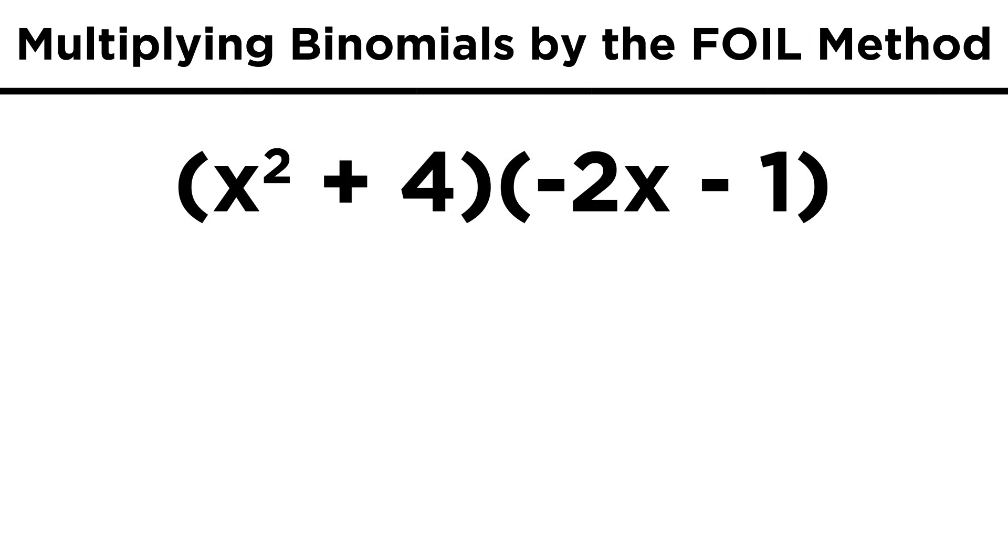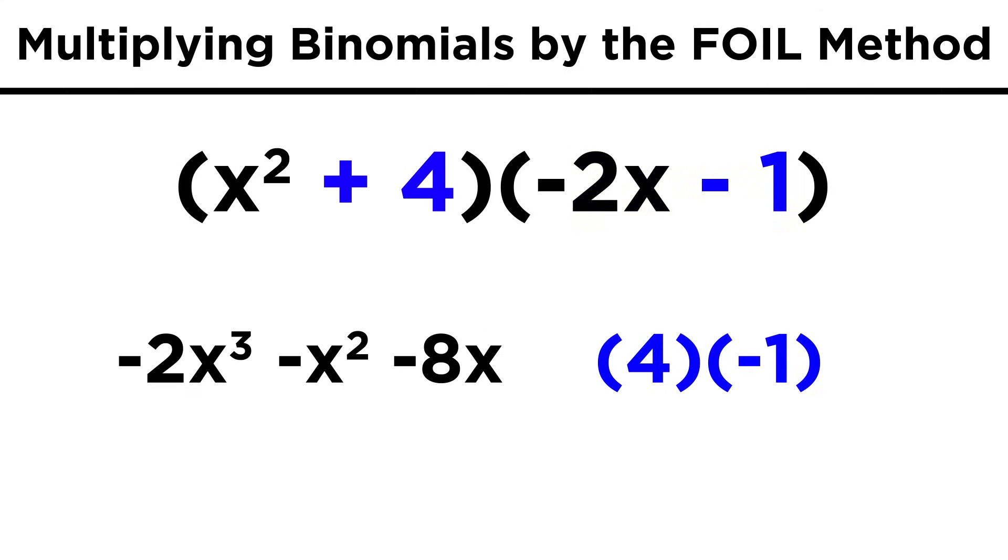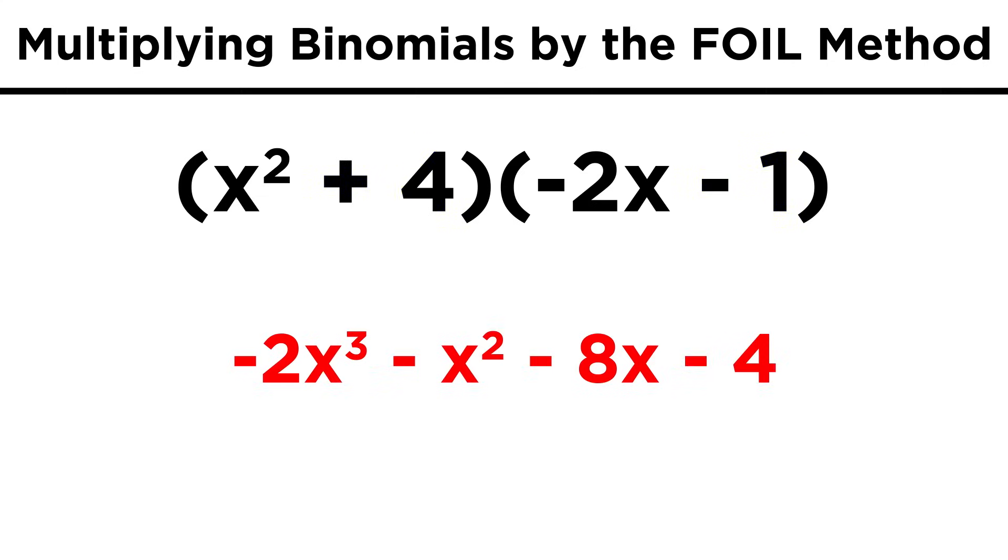Let's try a trickier one, x squared plus four times negative two x minus one. These binomials look different than the previous example, but we still just FOIL as usual. For the first term, we get x squared times negative two x, which is negative two x cubed. For the outer, since there's a negative one, we get negative x squared. Then inner, we get negative eight x, and lastly, four times negative one is negative four. There are no like terms to combine, so that's the end of it.